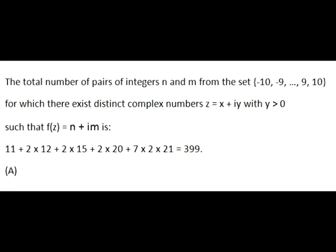For each curve, except when m squared is equal to 0, we must count two pairs of coordinates, n, m, and n, minus m. So we count 11 such pairs for m squared 0, and multiply all other numbers that we have calculated earlier by 2. The result is 399. The answer is A.